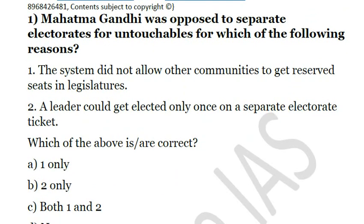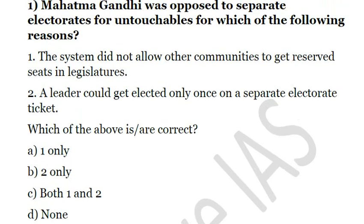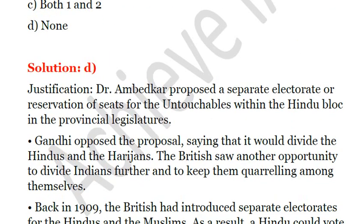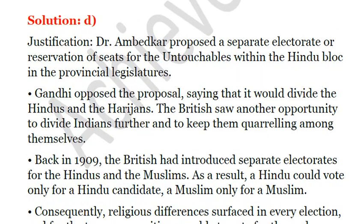None of these statements is correct. Mahatma Gandhi was opposed to separate electorates for Dalits because he saw that the British were trying to create a divide between Hindus themselves — between the Harijans and the other castes — just as they had divided Hindus and Muslims through the separate electorates of 1909. That's why Gandhi was opposed, and the answer is D: None.